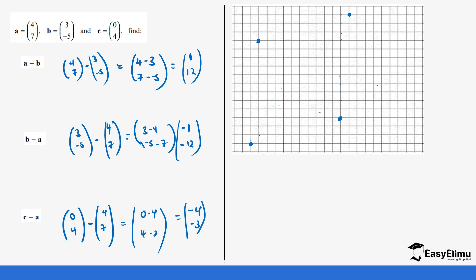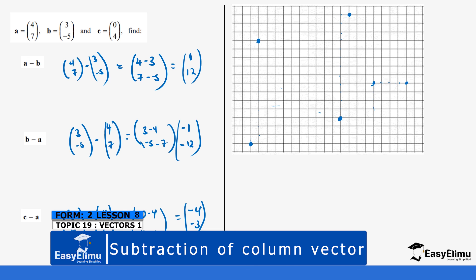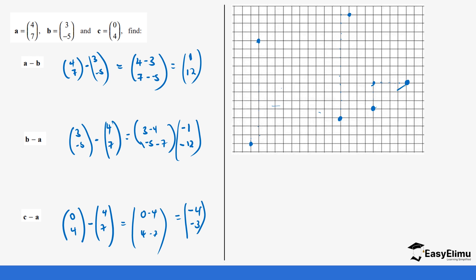We can pick our starting point here. From the starting point, we move four units on the x-axis — one, two, three, four — and then three units downward — one, two, three. Our beginning point is here and our final point is here. We join them, and this is our vector. That is how we represent vectors on a graph, especially when subtracting them.